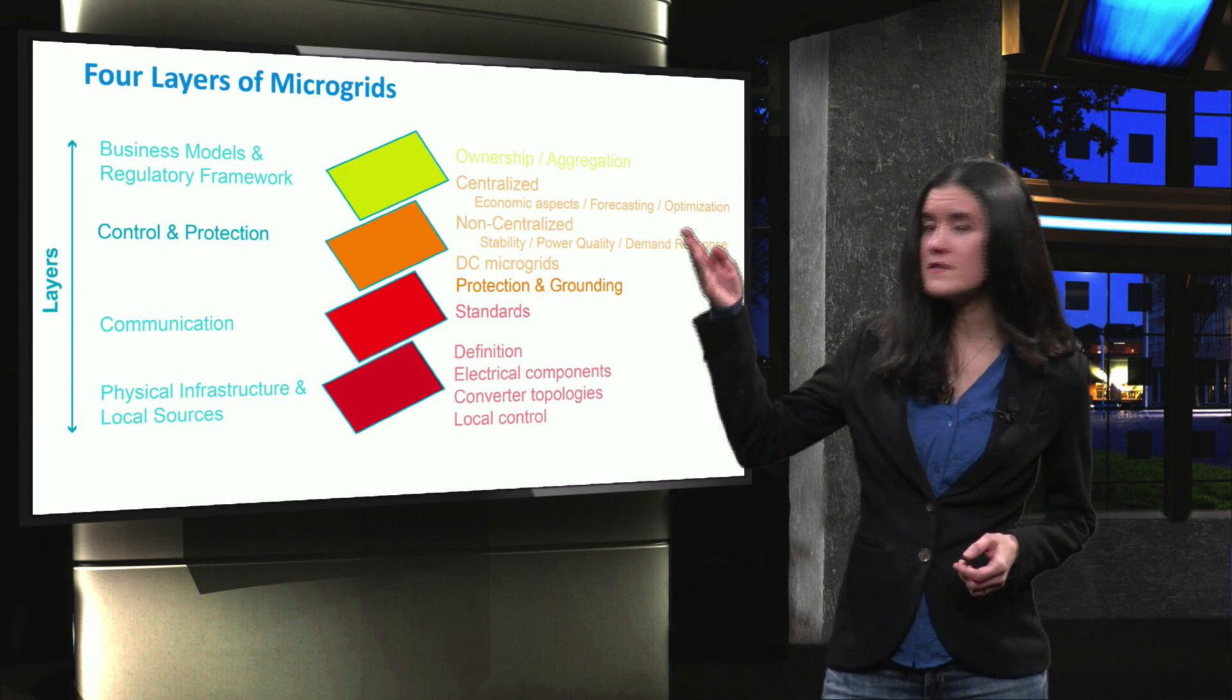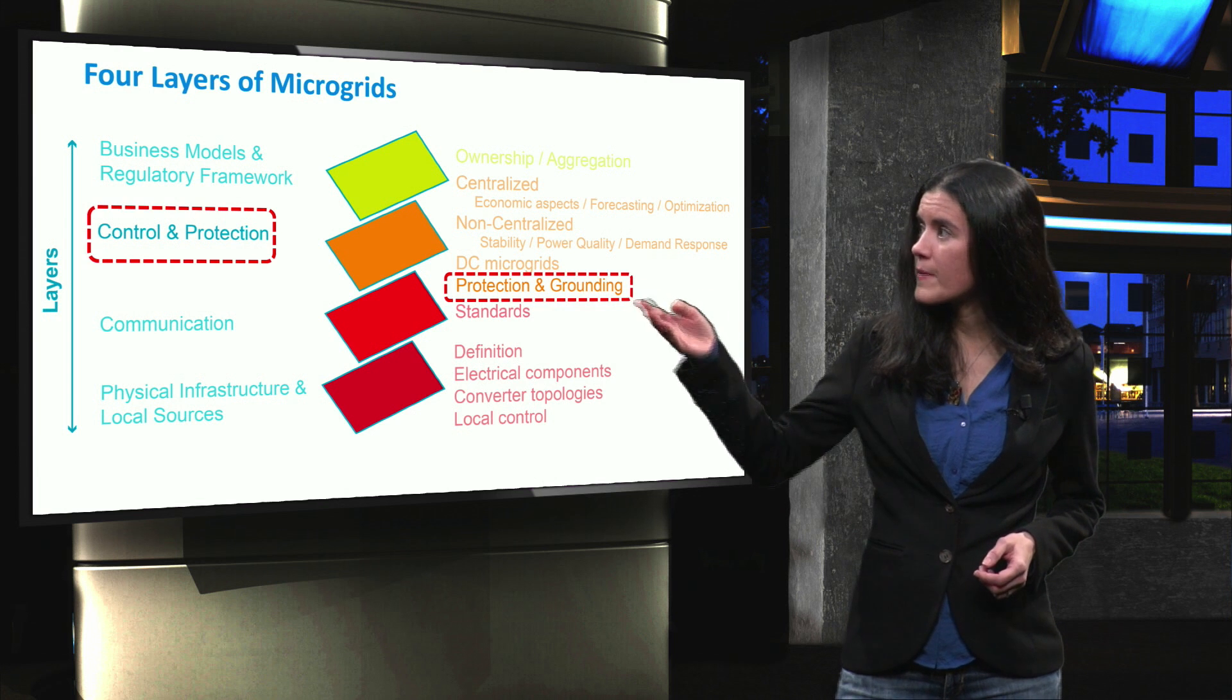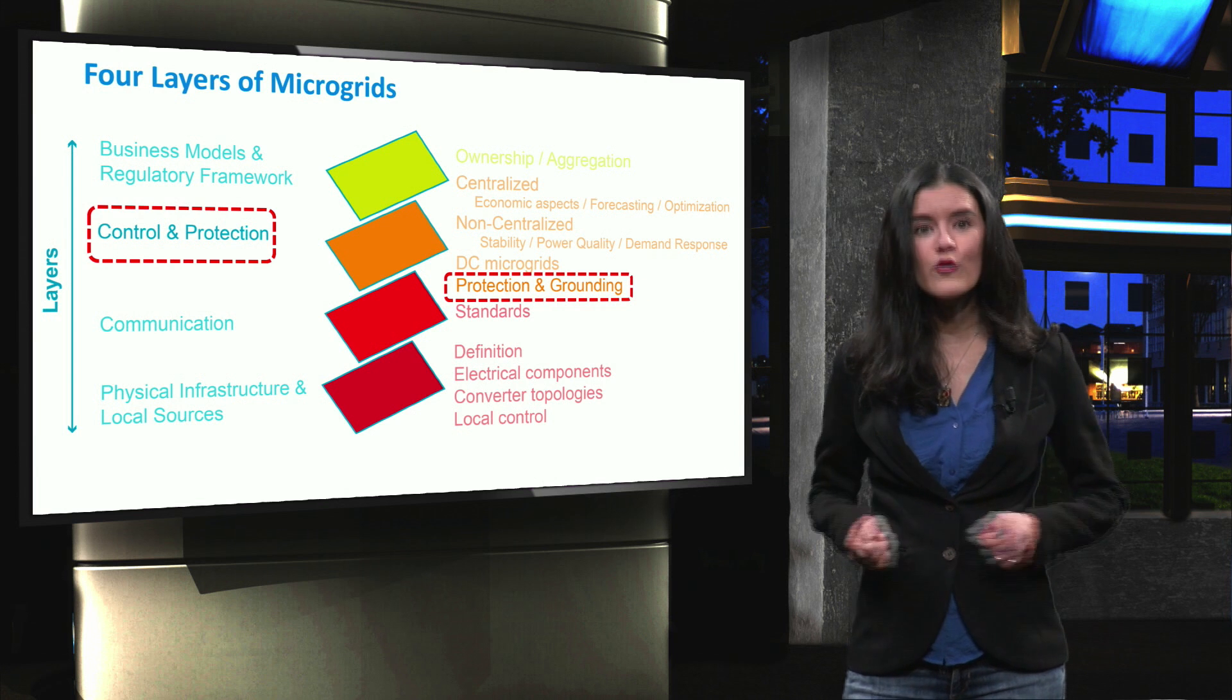The top level contains the business models and the regulatory framework. Protection and grounding corresponds to the third layer, which is control and protection.